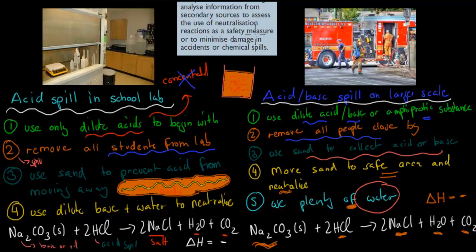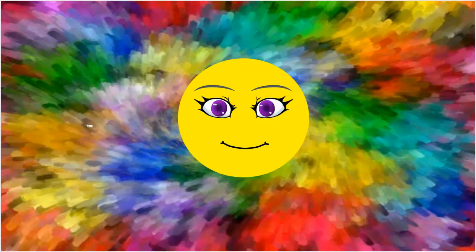The dot point says assess the use of neutralization reactions as a safety measure or to minimize damage in accidents or chemical spills. What I just described is two scenarios: a spill in a school lab or a spill on a larger scale somewhere outside. In both cases, we can use a neutralization reaction to remove the acid so people won't get burned. The products themselves from that neutralization reaction are completely harmless: NaCl, H2O, or carbon dioxide. But the one thing you should remember to mention is we're going to make sure to make it as dilute as possible when we do neutralization reactions. Because whilst the products are harmless, the energy that gets released could cause damage if it's very concentrated. So we still have to be careful of our neutralization reactions. I hope that was useful. Thank you for watching.